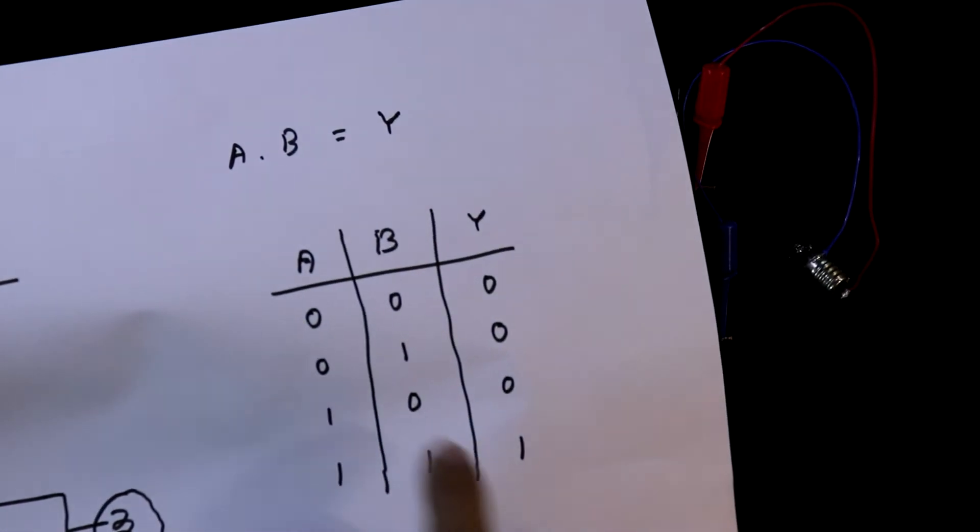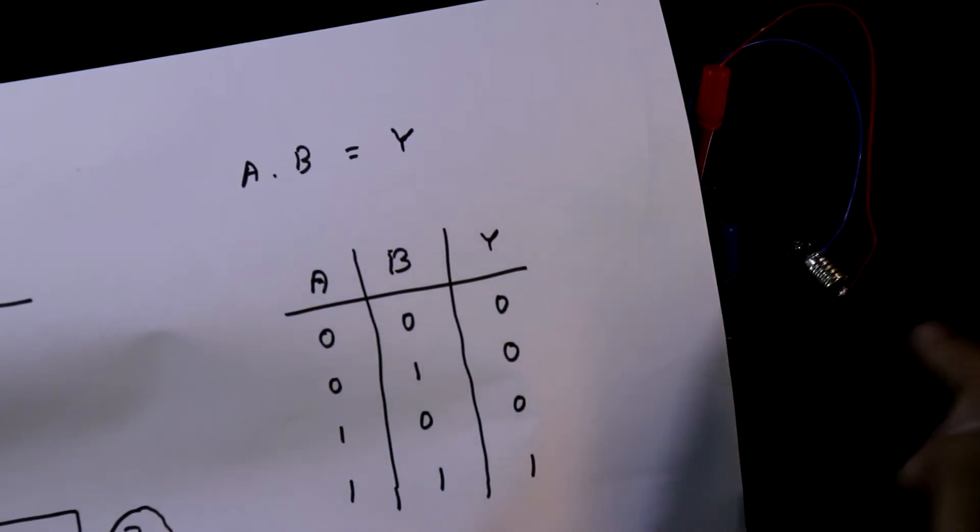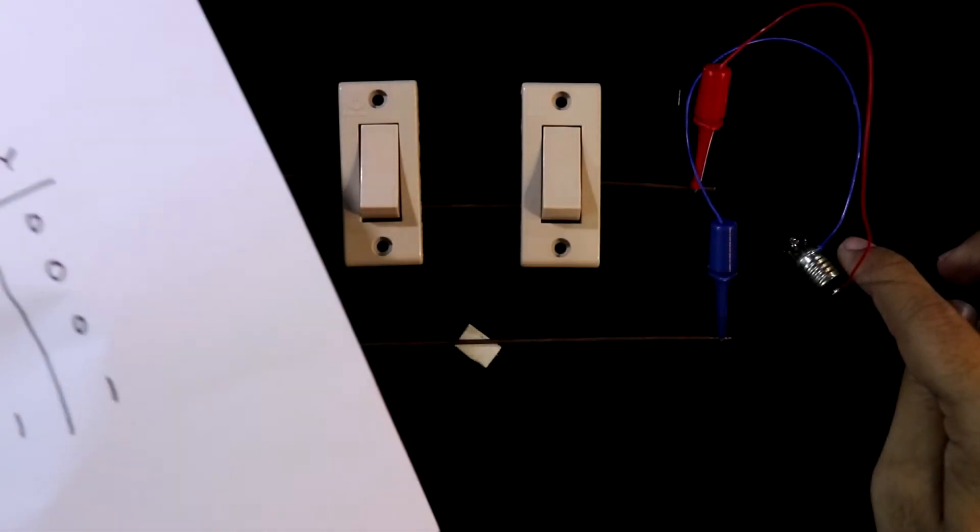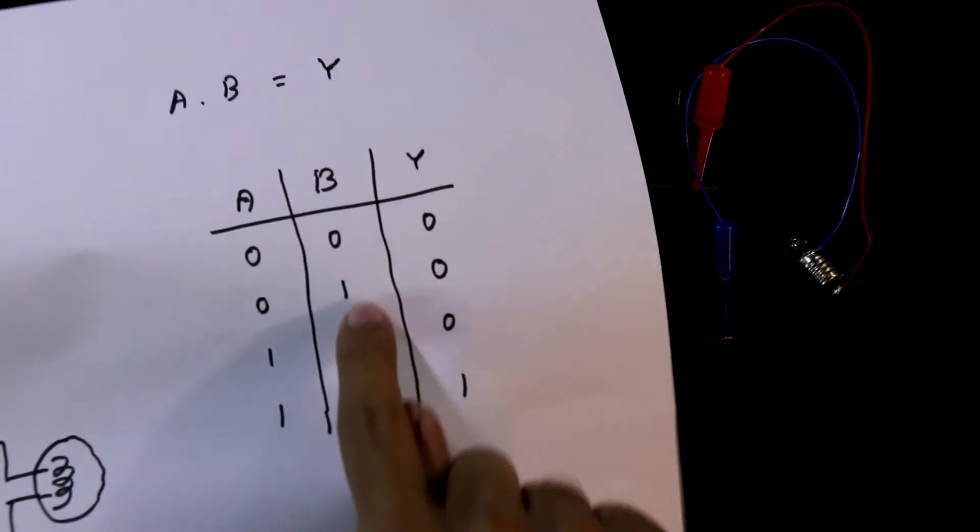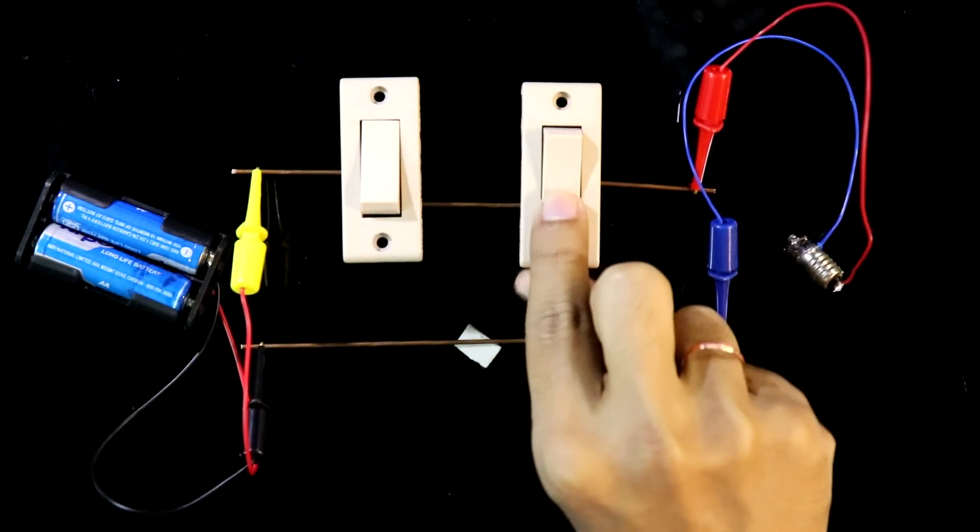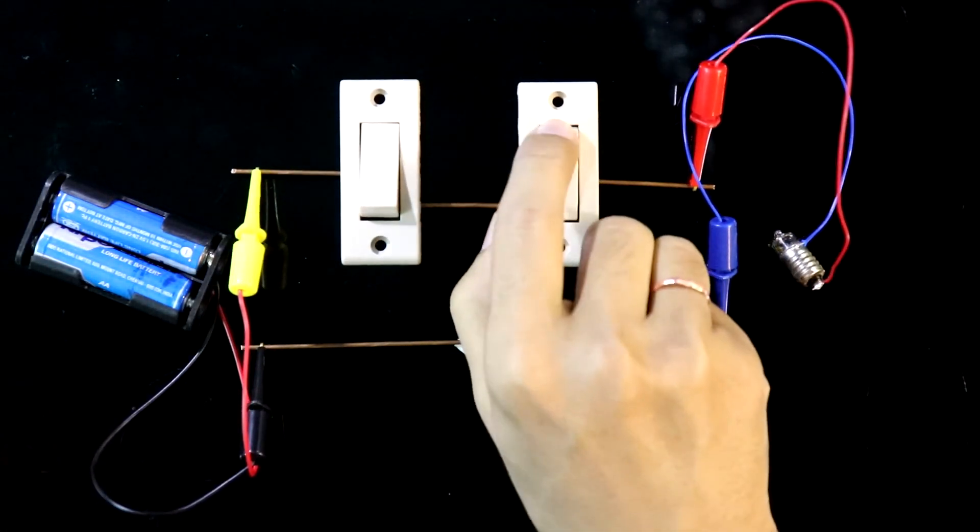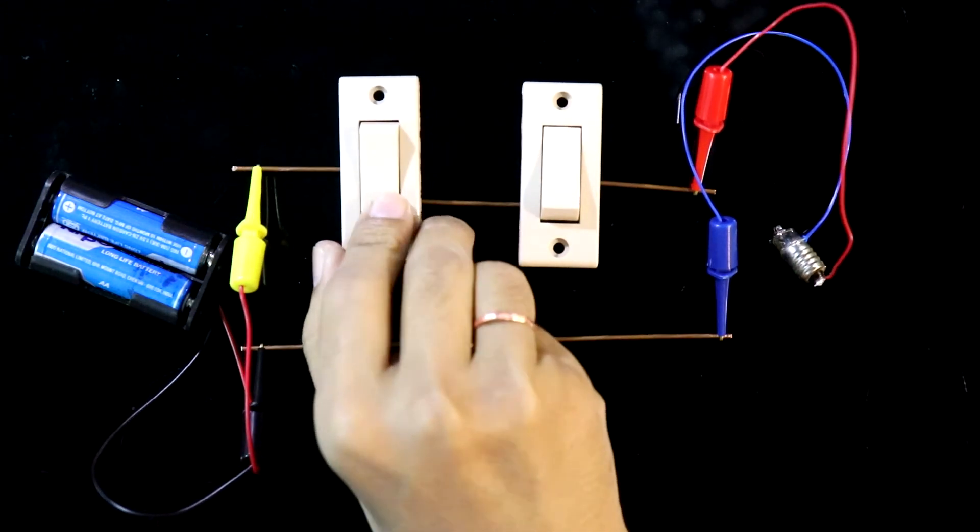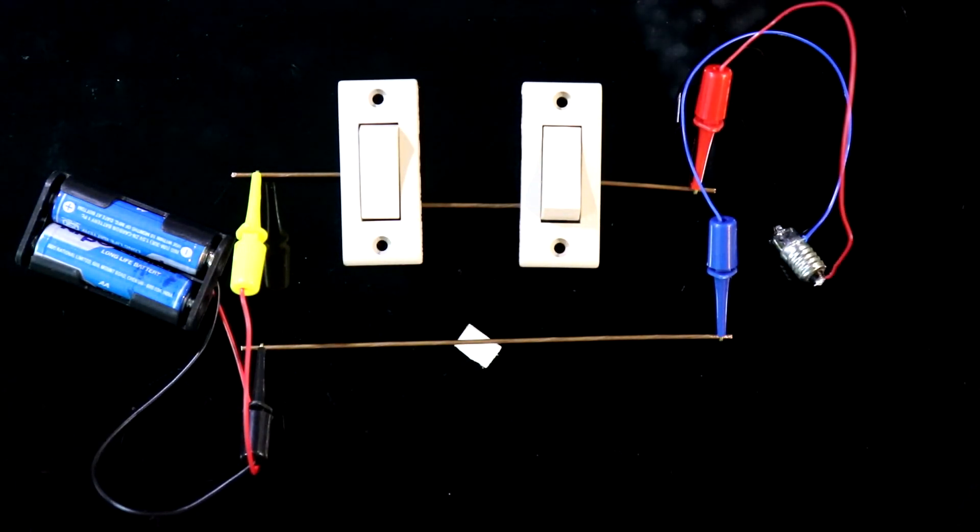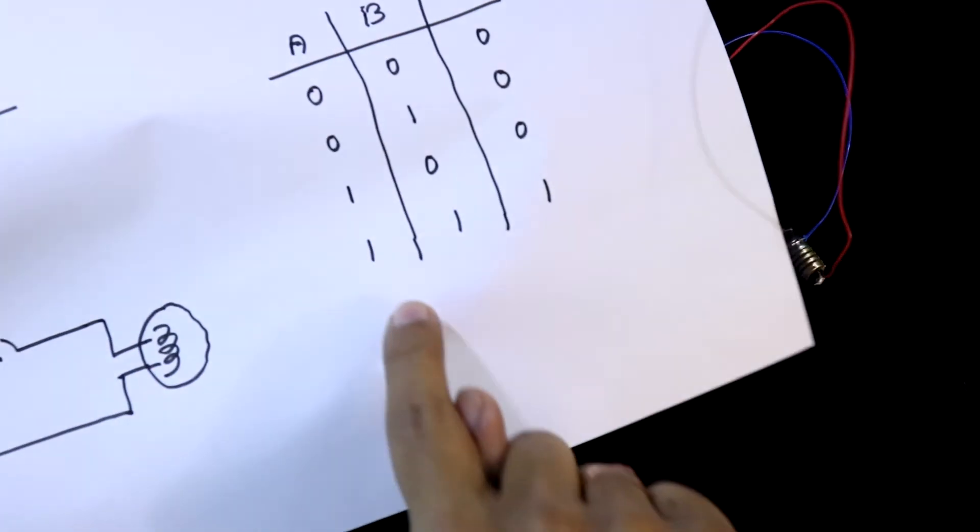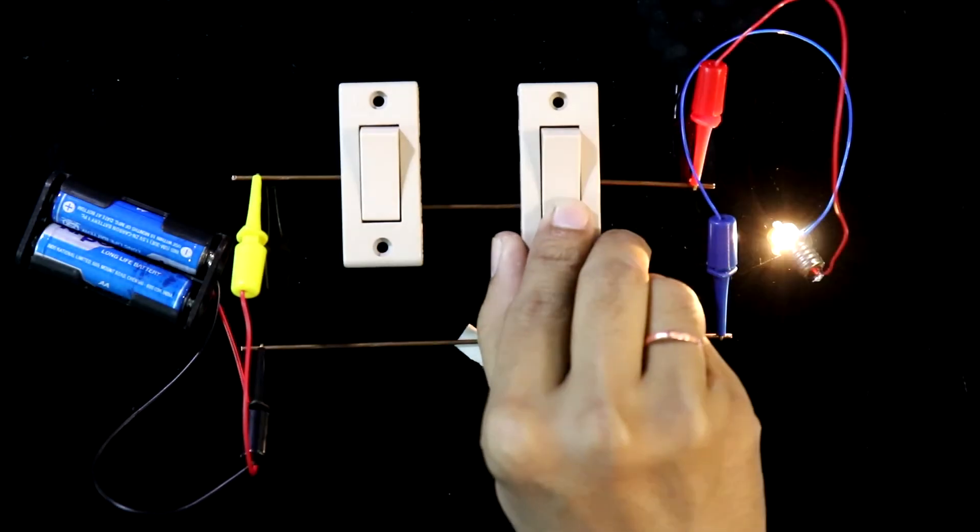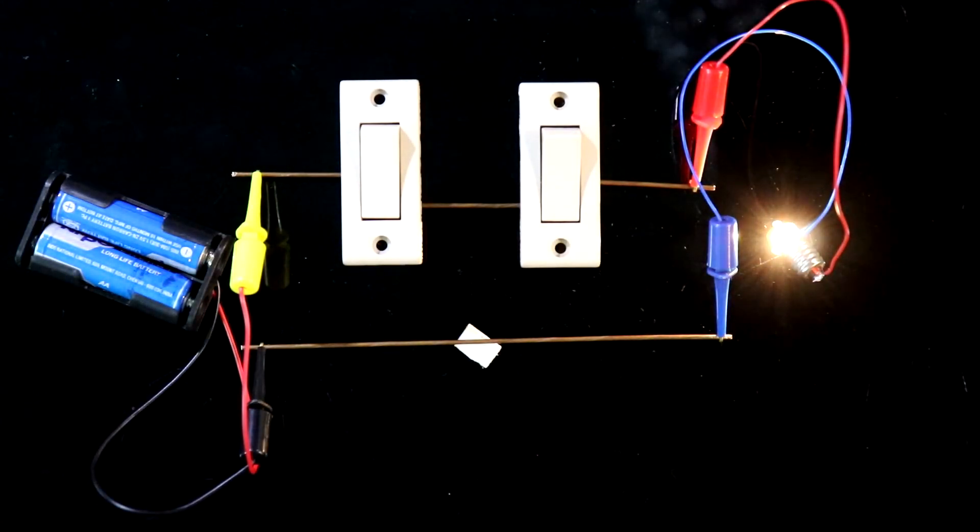Both switches are off, so we are getting output 0. Now B is 1, we are getting output 0. A is 1, we are getting 0. If both are 1, then only we are getting the output.